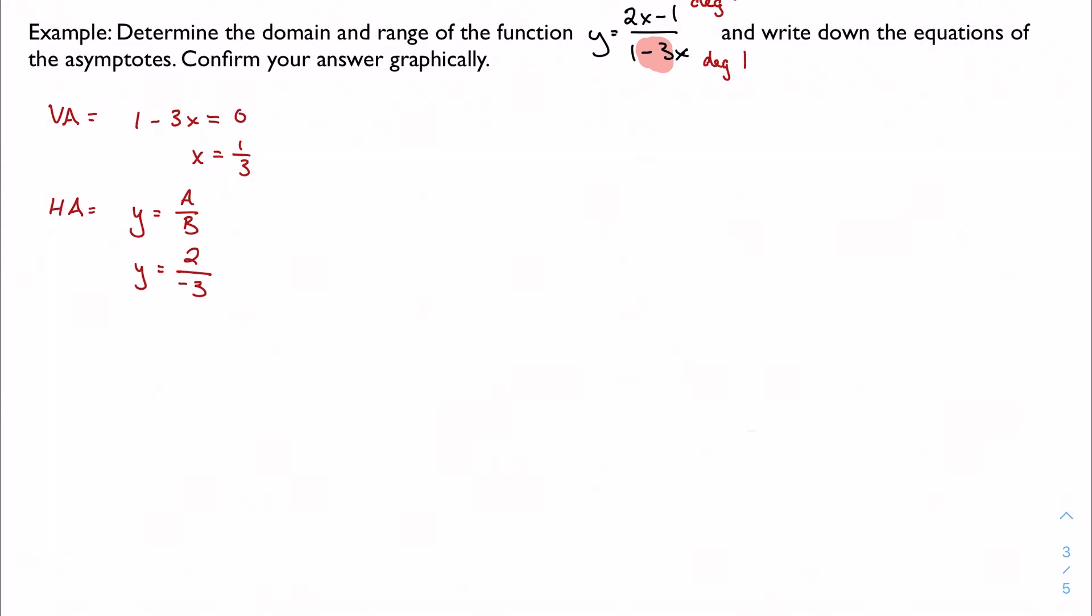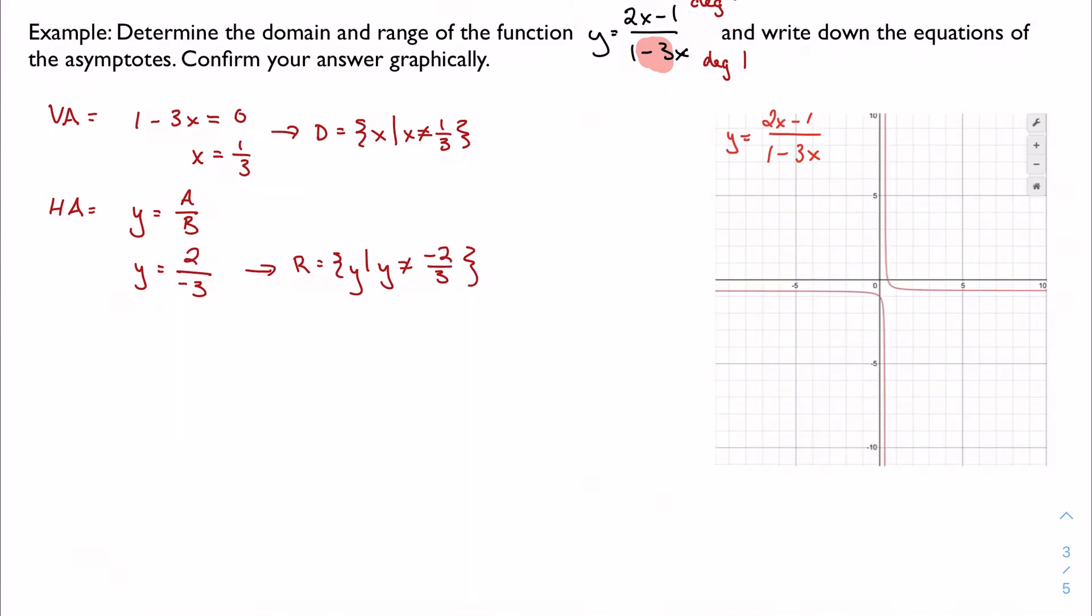Either way, in this case I have y equals negative 2/3. This becomes my domain and range: x not equal to 1/3 and y not equal to negative 2/3. Did I put the graph here? Yes, I did. You can see the horizontal and vertical asymptotes again.